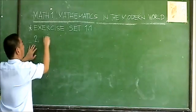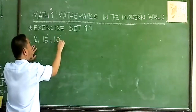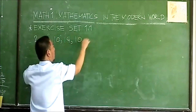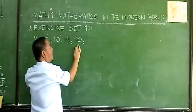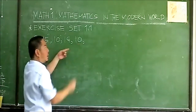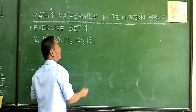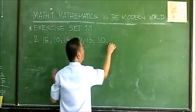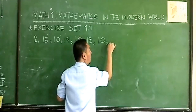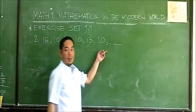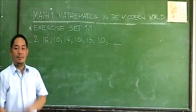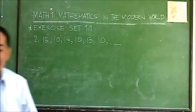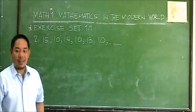The sequence for number 2 is: 15, 10, 14, 10, 13, 10, 12. Just relax. To solve any pattern, you must be a good observant and you must also have the ability to interpret these patterns into a mathematical equation.